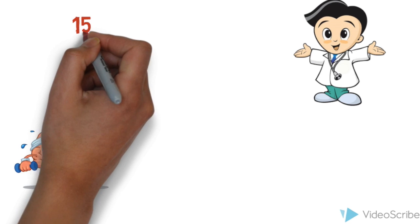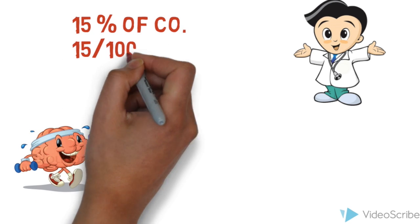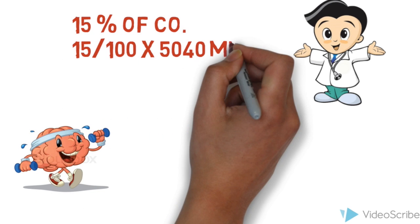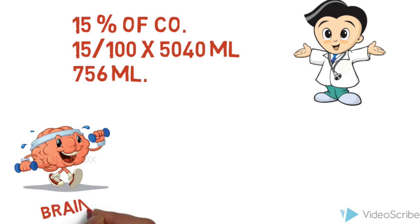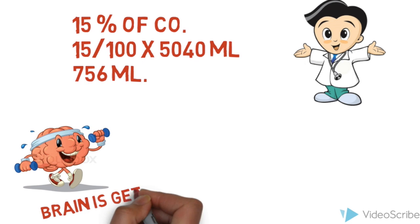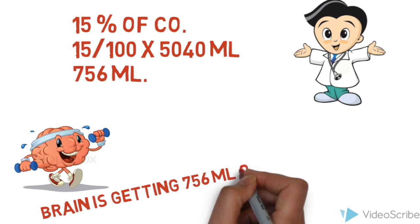We will get a cardiac output of approximately 5 liters. We know that the brain is getting 15% of cardiac output. 15% of 5 liters gives us 750 ml. Therefore, the brain is getting approximately 756 ml of blood per minute.